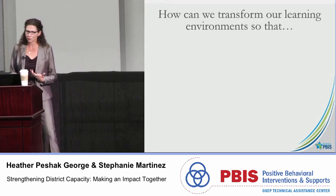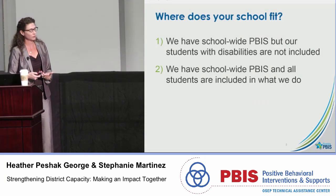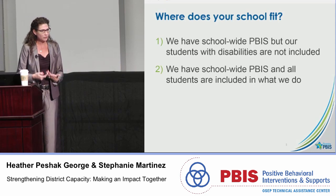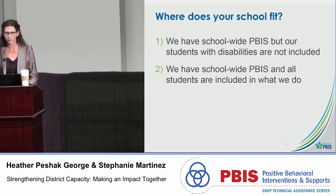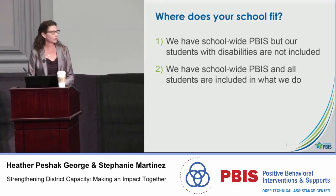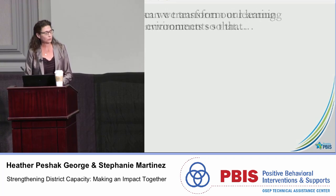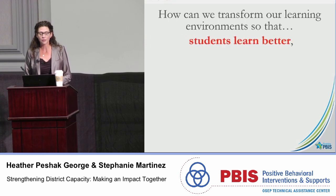Let's think about how we can transform and make sure that all of our students are included. We need to put mechanics in place, because it also requires conversations with our adults who interact with students with disabilities, so that those students have full access to our Tier 1 system. Let's think about how we can transform our learning environment so that students can learn better.